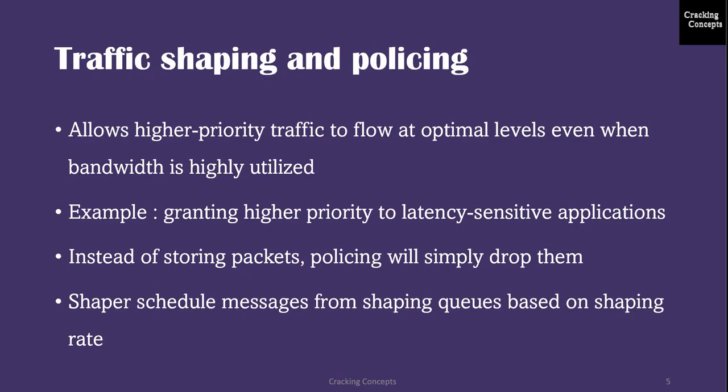Policers are normally configured on the service provider network to discard incoming traffic that exceeds the line rate. What enterprises normally do is shape the traffic before it is sent to the service provider. The shaper slows messages down by queuing the messages. It then serves the shaping request, but not based on when the physical interface was available. Instead, it schedules the messages from the shaping queues based on the shaping rate.